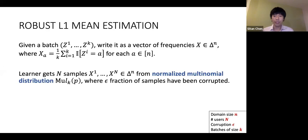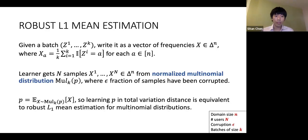This vector of frequencies X, for the uncorrupted samples, is simply sampled from the multinomial distribution generated from k draws from p. In particular, the mean of this normalized multinomial distribution is precisely p. So the problem of learning p in total variation distance from untrusted batches is precisely the question of robustly estimating the mean of a multinomial distribution in L1 distance.